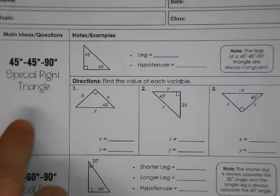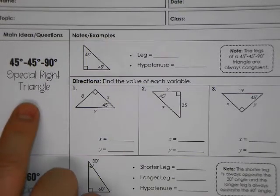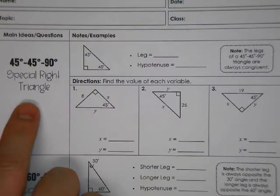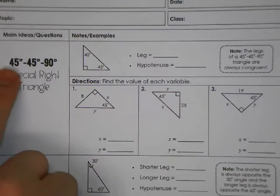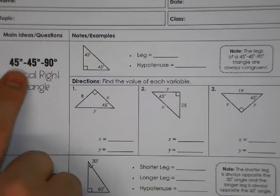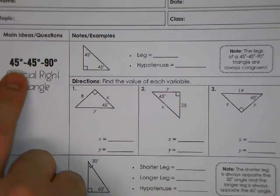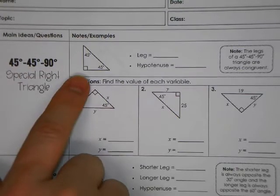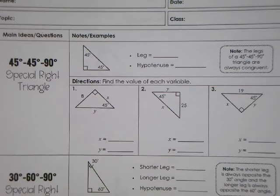The first type of special right triangle we're going to look at is known as a 45-45-90 special right triangle. Because it is 45-45-90, these are congruent angles, so that implies by the converse of the isosceles triangle theorem that a 45-45-90 triangle is going to be an isosceles triangle, and they are.